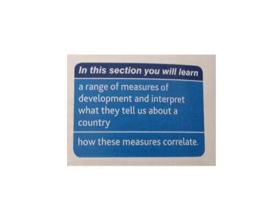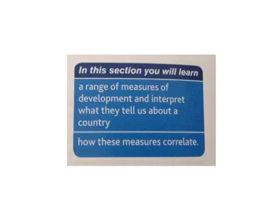In the last screencast, we looked at the traditional ways of dividing up the world in terms of development. We also looked at a more modern division based on wealth. However, just purely focusing on the wealth of a country does not give us a true idea of how developed it is. Because some places that are rich actually have areas that are poor within them, and also poor countries have some people that are wealthy. So this screencast is looking at a range of measures of development and will interpret what they tell us about a country and how these measures actually correlate.